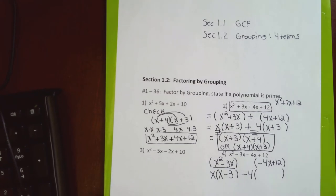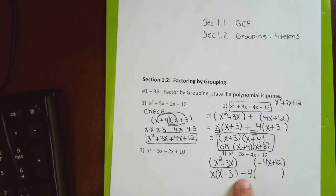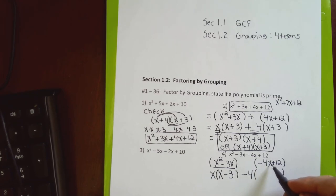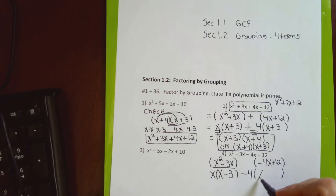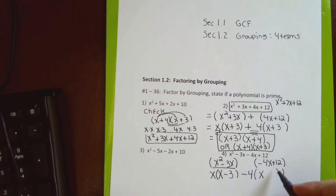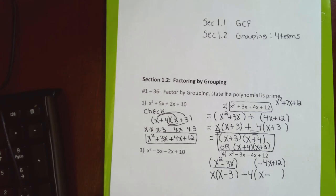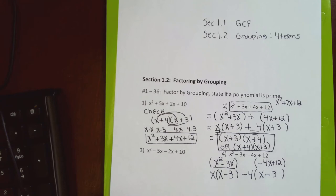The GCF between 4 and 12 is 4, but because the first term is negative I factor out negative 4. Inside the parenthesis I flip the signs and divide by 4: the negative sign turns positive, 4 ÷ 4 = 1, I leave the x. The positive sign flips to negative, and 12 ÷ 4 = 3.